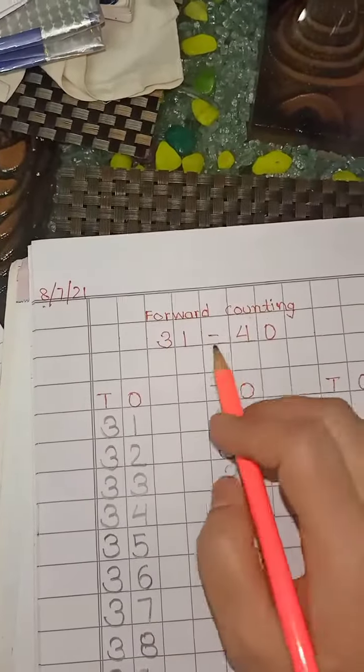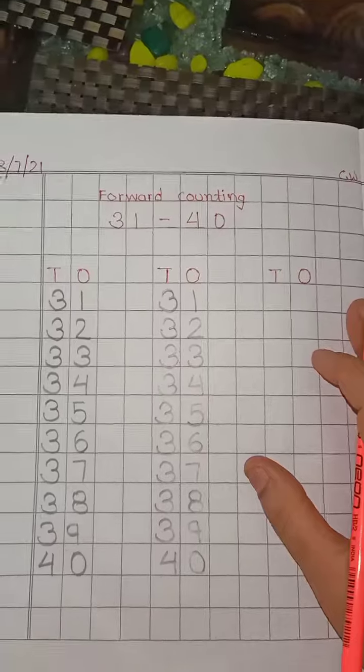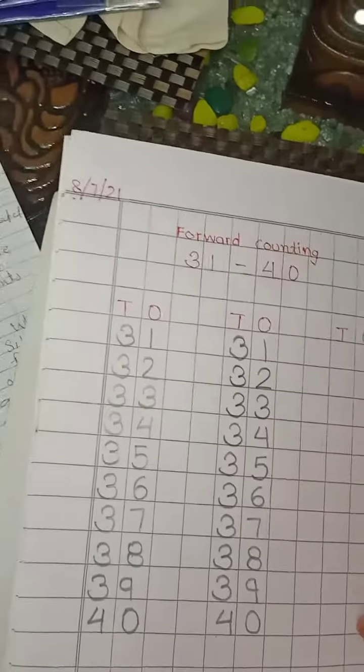Okay bachche, now take out your mathematics notebook. You have to do forward counting 31 to 40. So bachche, this is your homework for today.